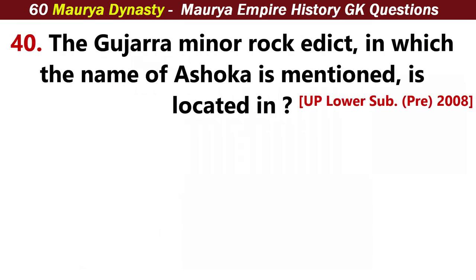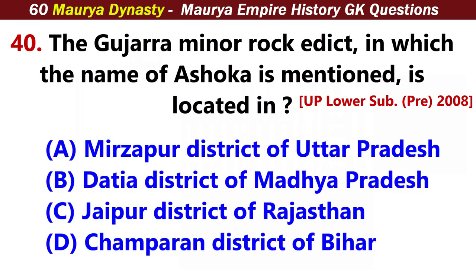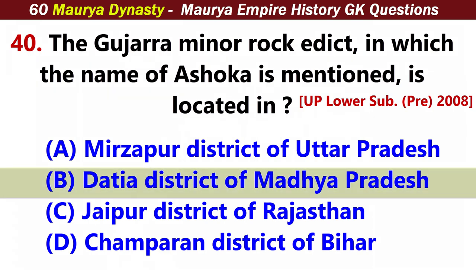The Gujarat minor rock edict in which the name Ashoka is mentioned is located in? Answer B: The third district of Madhya Pradesh.